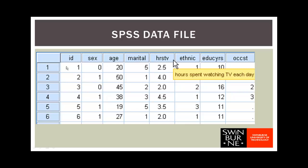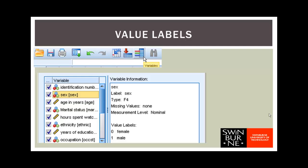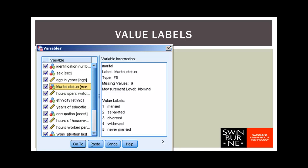Looking at the first row of data: this person has been given identification number 1, they're 20 years old and watch 2.5 hours of television per day. But what does the 0 for sex mean, or the 5 for marital status? In SPSS, instead of using letters to represent categories we use numbers — so instead of M and F we use 0 and 1. To find out how a variable is coded, click on the variable icon in the icon bar and then click the variable of interest. For sex, 0 is female and 1 is male — so person 1 was female. For marital status, a code of 5 means never married.